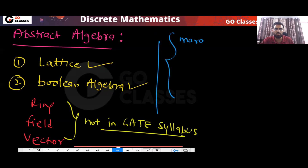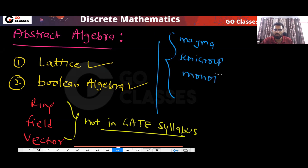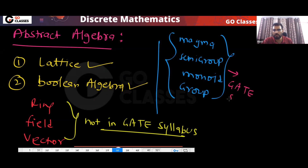What we need to study are these concepts: what is magma, what is semigroup, what is monoid, and what is group. These concepts are in the GATE syllabus. This is what we have in the GATE syllabus and this is what we will study.